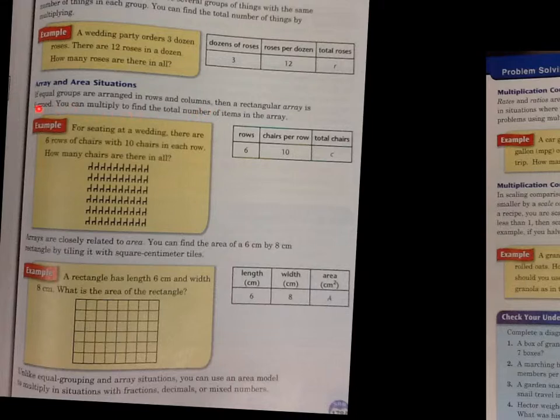If we're also talking again about that wedding, and we say for seating at a wedding, there are 6 rows of chairs with 10 rows or 10 chairs in each row. How many chairs are there in all? You can always set up a picture.